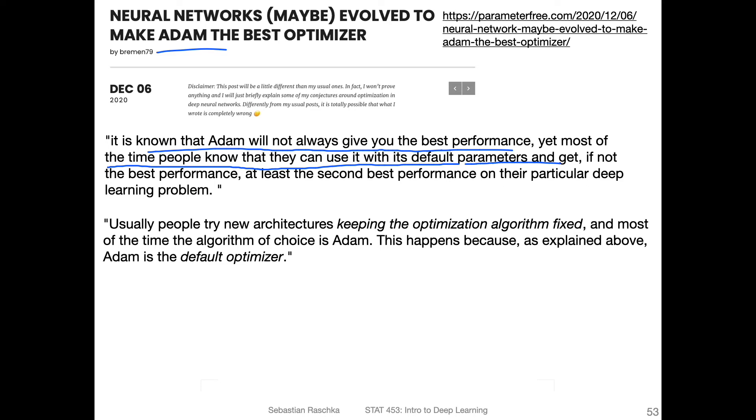That is also what I observed in practice. But here, the argument is maybe it's not because Adam works so well, it's because Adam worked so well in the past. And now with these new architectures, people just keep using Adam, and the new architectures that evolved expected that people use Adam. So Adam is essentially a good fit for these architectures because these architectures were evolved with Adam in mind. So there's like this evolution kind of bias here. The person also says usually people try new architectures, keeping the optimization algorithm fixed. And most of the time, the algorithm of choice is Adam. This happens because Adam is the default optimizer. It's like a chicken-egg problem in a way.